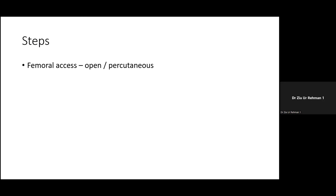Femoral access can be done open or percutaneously. We are more comfortable with the open approach using a transverse incision. The problem with open access is increased wound complication, infection, and lymphatic leak. So extra care should be taken with sterility, and lymphatics should be properly tied. One technique is to go to the inguinal ligament, take all tissue down, and expose the common femoral artery.